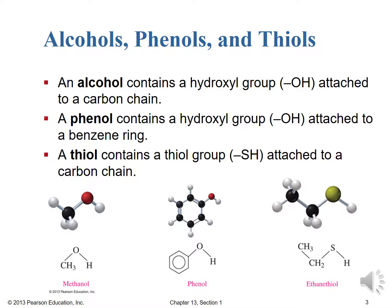Rotten eggs smell comes from hydrogen sulfide, which is not organic, but it has that SH group giving that terrible rotten egg odor. To summarize: an OH group attached to a non-aromatic carbon is an alcohol; if that carbon is part of an aromatic ring, we call it a phenol; and if it's an SH group attached to the carbon chain, it's known as a thiol.